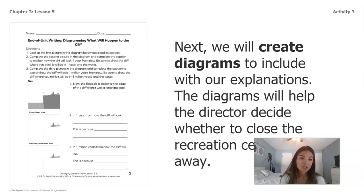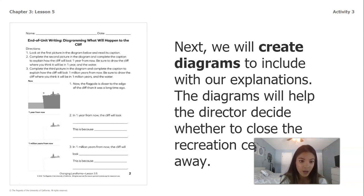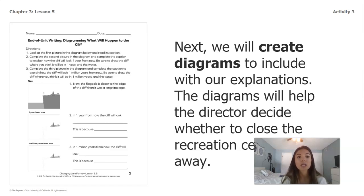Direction one is: look at the first picture in the diagram below and read its caption. Looking at the picture, it's showing a picture of the cliff and the caption says the flagpole is closer to the edge of the cliff than it was a long time ago. That is what the cliff looks like today.